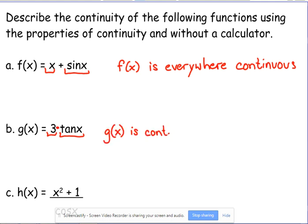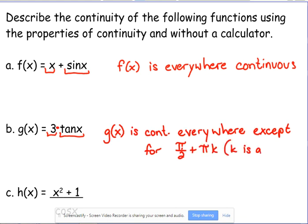So g(x) is continuous everywhere except—remember tangent has those exceptions—except for pi over 2 plus pi k, where k is an integer. Yes, you need to write it out like that.